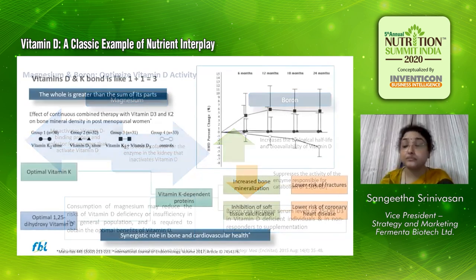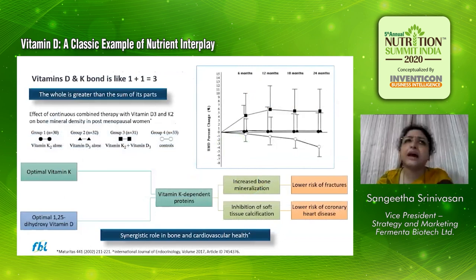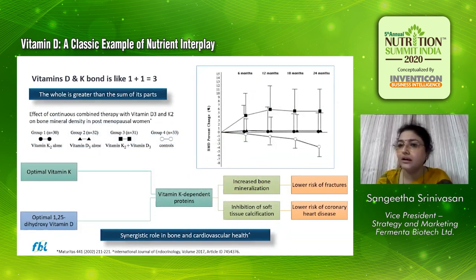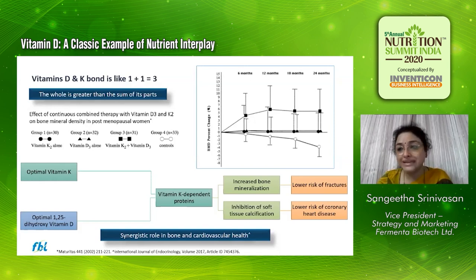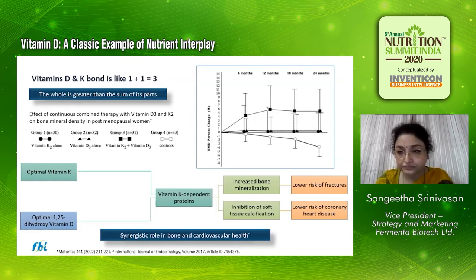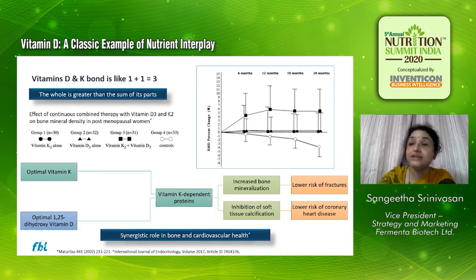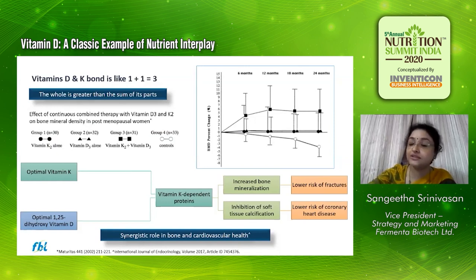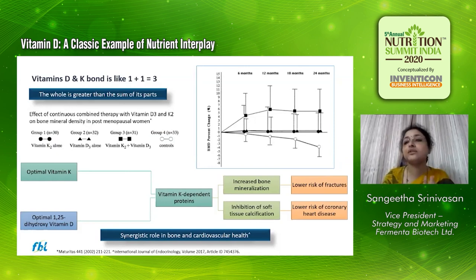Moving on, vitamin K is a very well established science and a fairly popular supplement therapy where vitamin D is given in combination with K2. Vitamin D and K2 behave more like twin brothers or twin sisters — one plus one becomes three. Vitamin D is required for the production of proteins that are dependent on vitamin K, and one of these proteins is the vitamin D binding protein. So there is a complementary role between vitamin K and vitamin D.